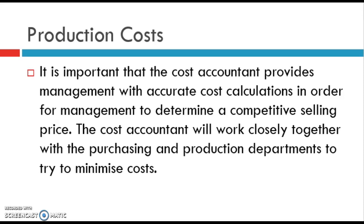Good afternoon everyone. This is the last section of the production function and it looks at production costs. In order to make maximum profit, a business needs to keep in mind all the costs that affect the profit. The production department should aim at decreasing these production costs by increasing productivity through effective use of resources. All costs at the different stages of the production process must be considered when calculating these costs.